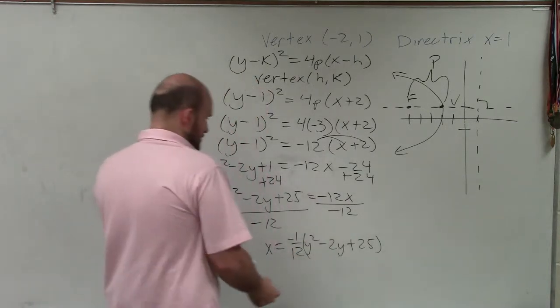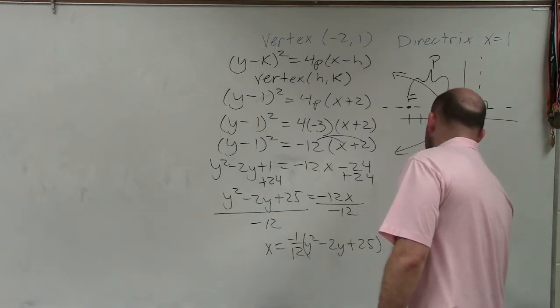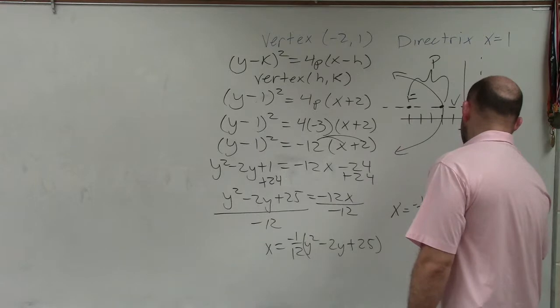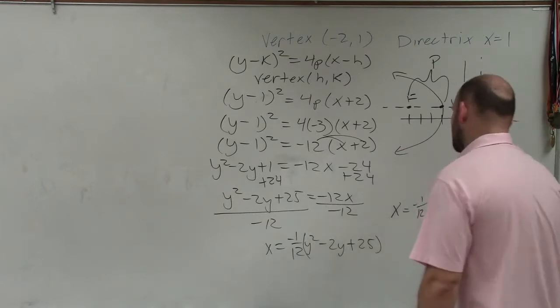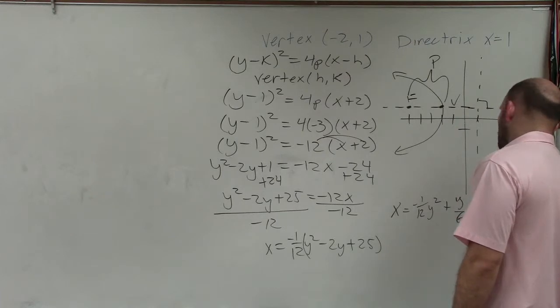If we distributed that through, though, it would look something like this. x equals negative 1 over 12th y squared plus y over 6 minus 25 over 12.